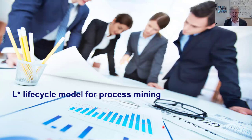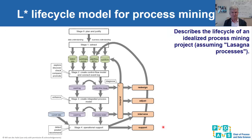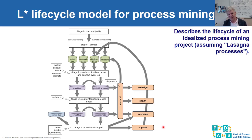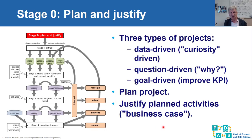The L-Star Lifecycle Model identifies five stages, numbered zero through four, describing the lifecycle of a process mining project. For a lasagna process — where data is of good quality, you have enough data, and the process is in control with not too much variability — you can execute all stages. For spaghetti processes where the process is not in control, changing all the time, and you don't have that many cases, you probably get stuck in the middle.